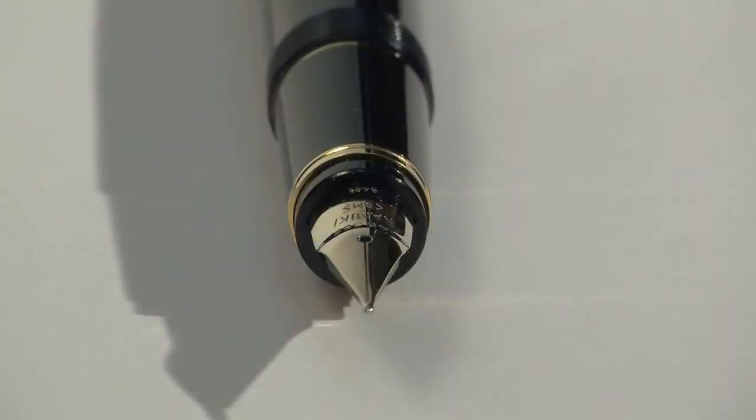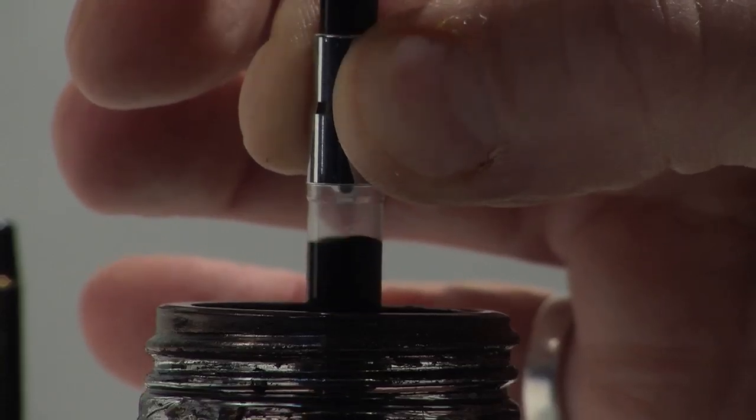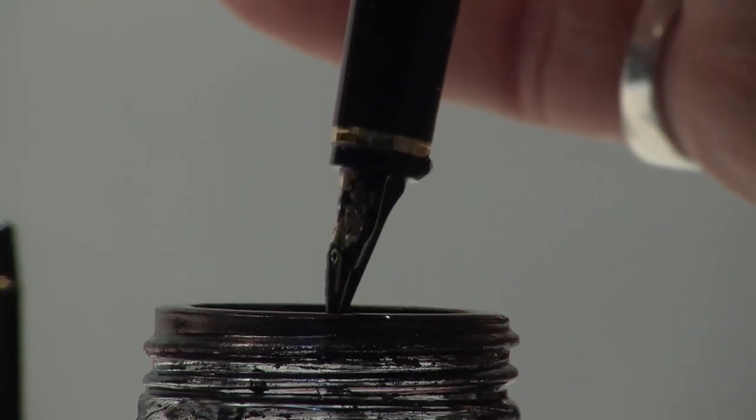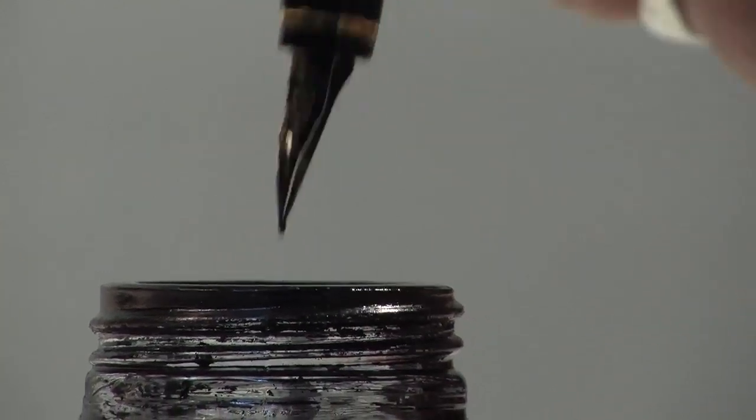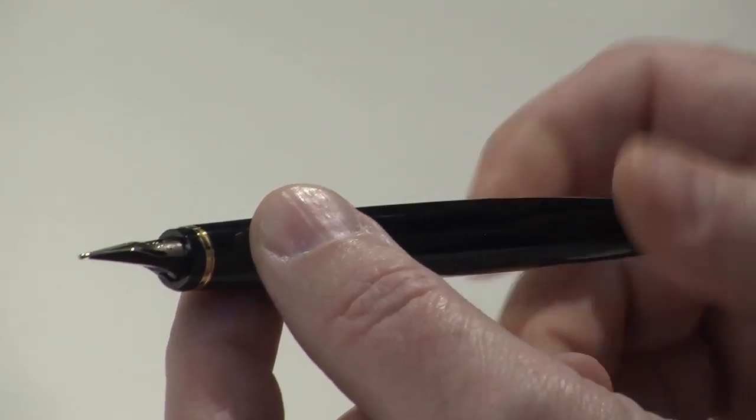The Falcon comes in three nib widths: soft-fine, soft-medium, or soft-broad. As with the nibs on most Japanese or Chinese fountain pens, a given nib width tends to be one nib width narrower than its American or European counterpart.